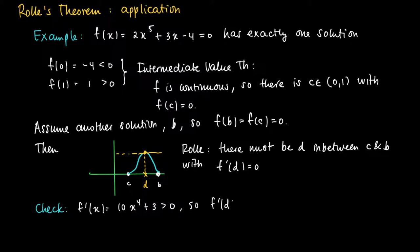So 3 is larger than 0, so the derivative is always larger than 0. So f'(d) equals 0 is not possible. So assuming another b for which the function value equals 0 leads to contradiction.